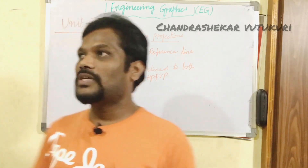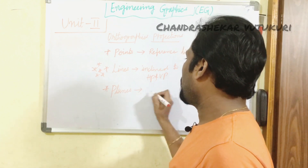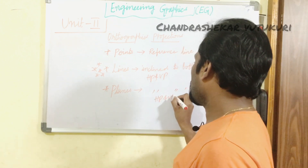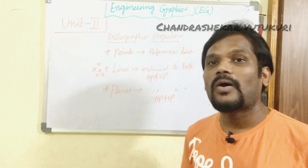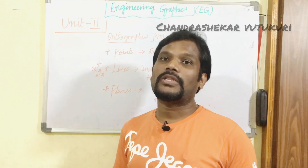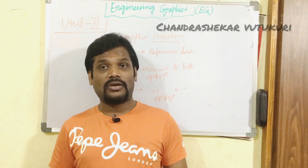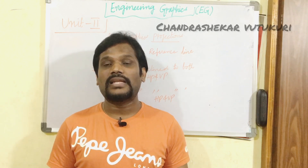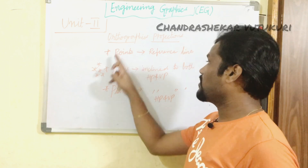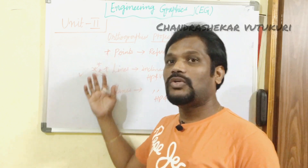The second unit also consists of concepts related to planes. Dear students, the planes question — this is all about inclined to both HP and VP again. If a question comes even from the planes, it is about inclined to both HP and VP. You should be very clear with all the different types of planes, starting from triangle, square, pentagon, hexagon, rectangle, circle, and sometimes even the semicircle.